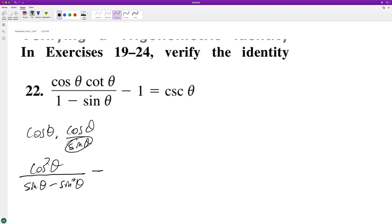And then what we can do is we can multiply this one by the denominator. So we get sine theta minus sine squared theta and the exact same thing on the bottom.